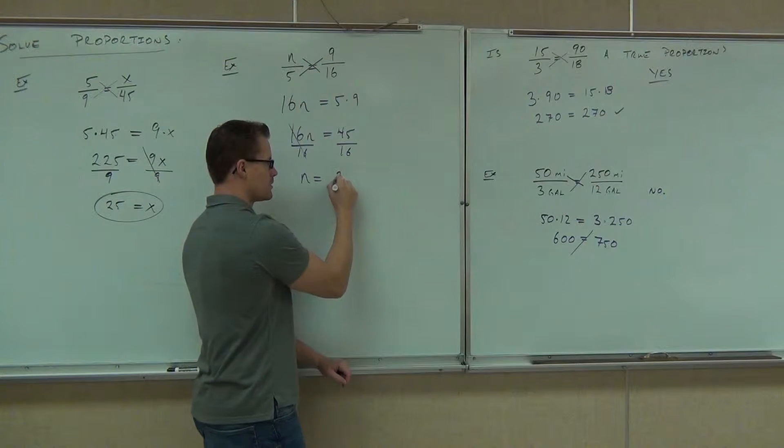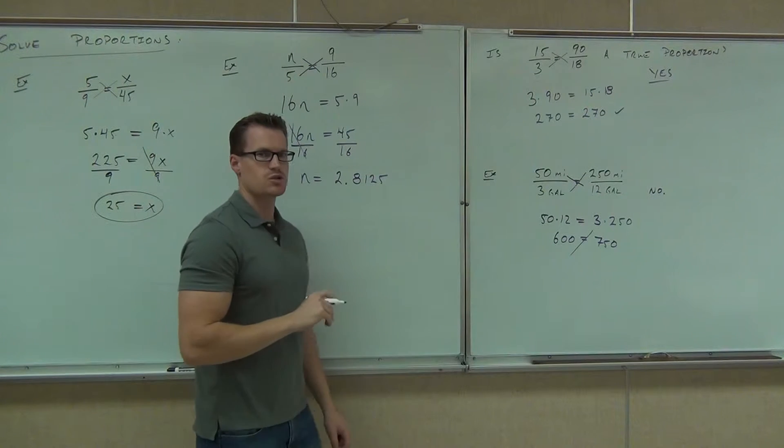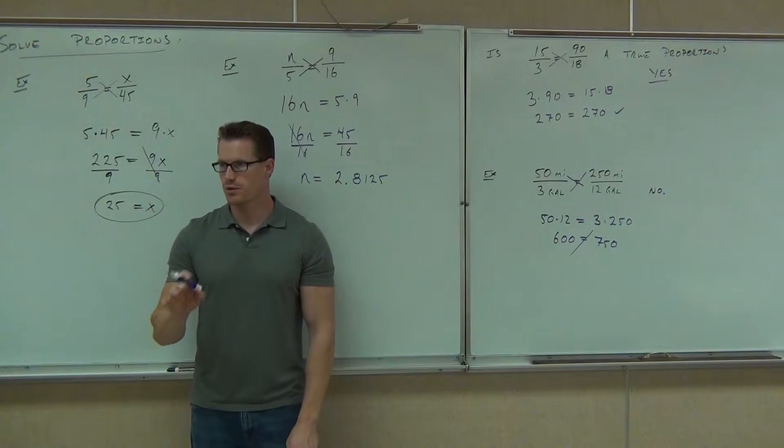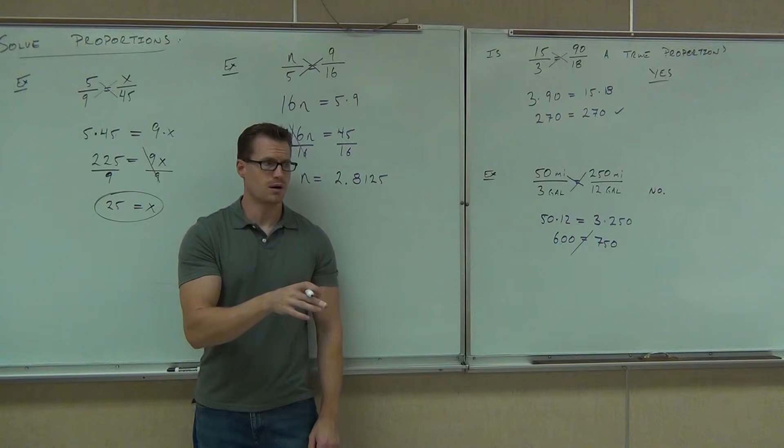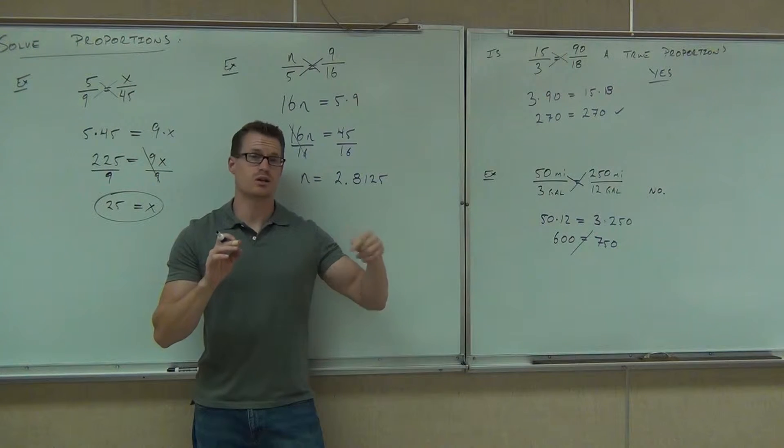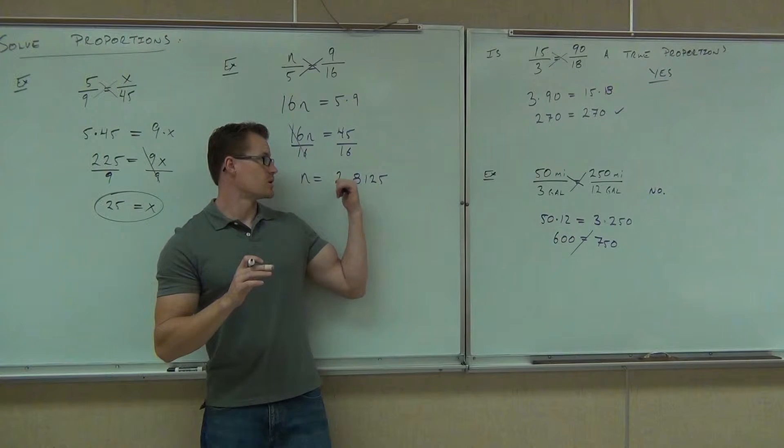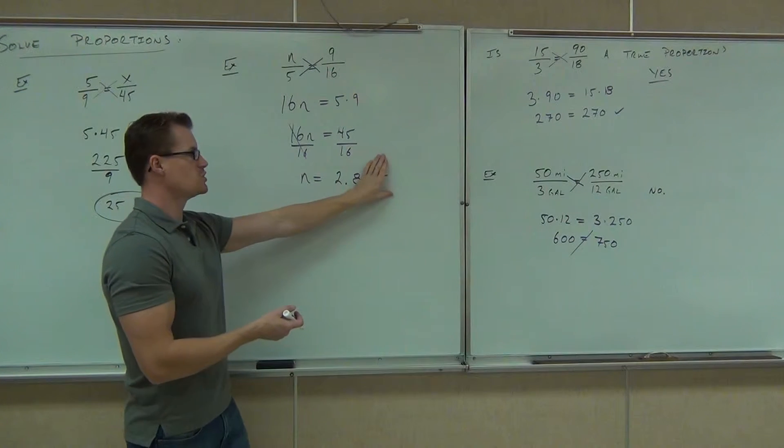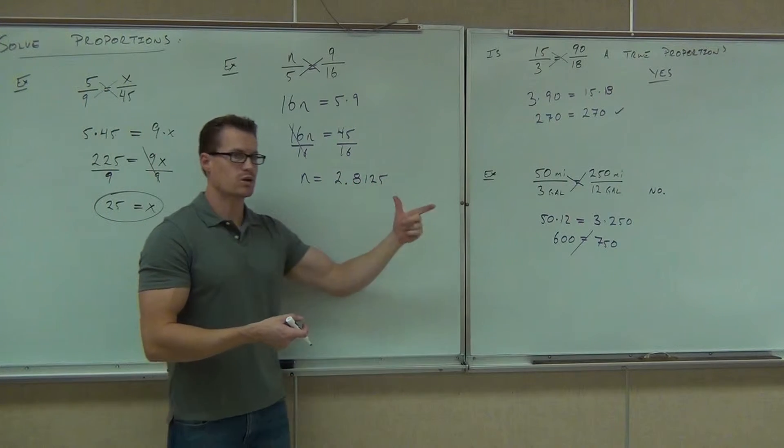Say that one more time. 2.8125. Unless it asks you to round it, give the whole thing. If your decimal ends, give the whole thing. If your decimal goes off the screen, then you're going to want to round it and it'll tell you what to round it to. Are you with me on that? So, here, if you're going to do this exact fraction, this exact fraction is not 2.8. That's not the same thing. This fraction is 2.8125.